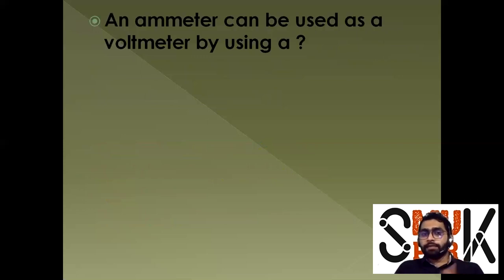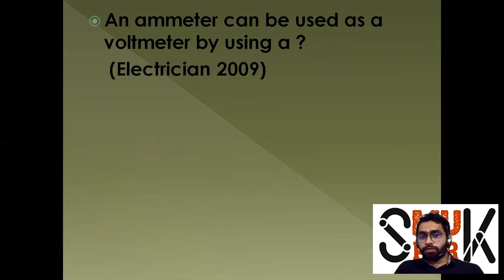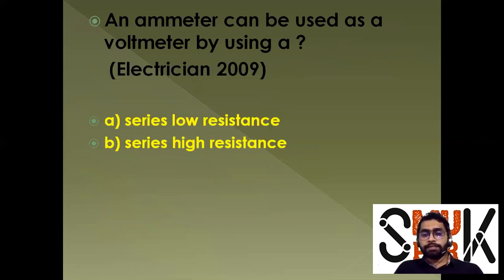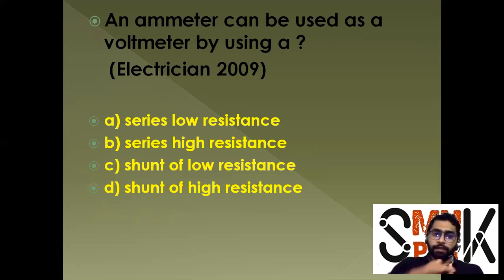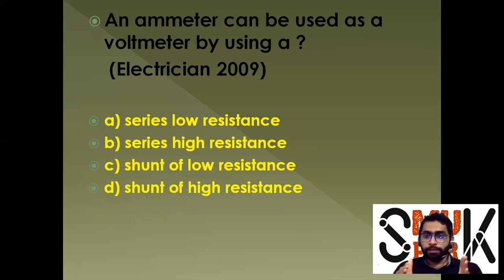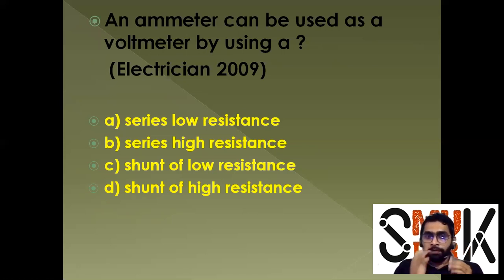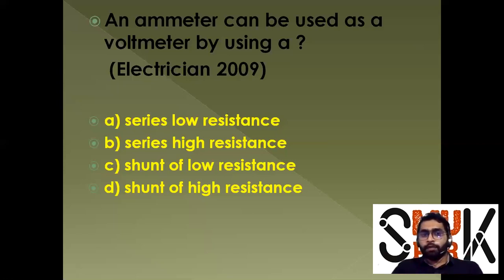An ammeter can be used as a voltmeter by connecting a high resistance in series with it. An ammeter has a low internal resistance, so to use it as a voltmeter, you connect a large series resistance — called a multiplier — to drop the total voltage across it.